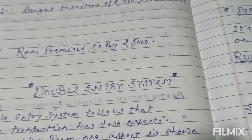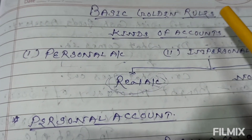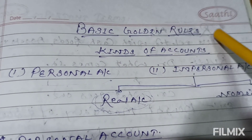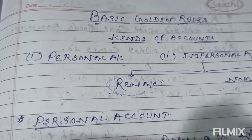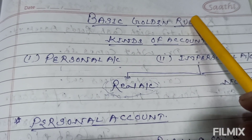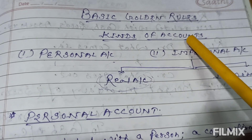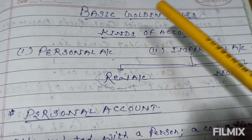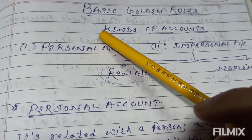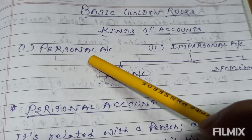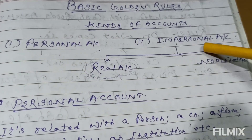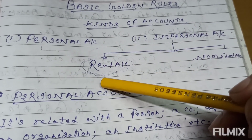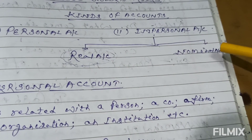What are the rules of the double entry system? For that you need to know the basic golden rules of accountancy, which are thoroughly based on the kinds of accounts. There are two main types: personal account and impersonal account. The impersonal account is further bifurcated into real account and nominal account.